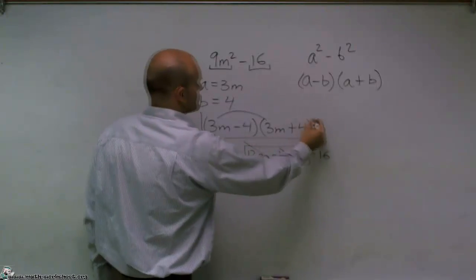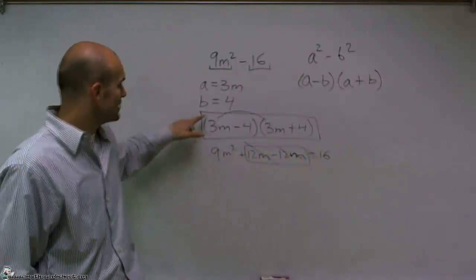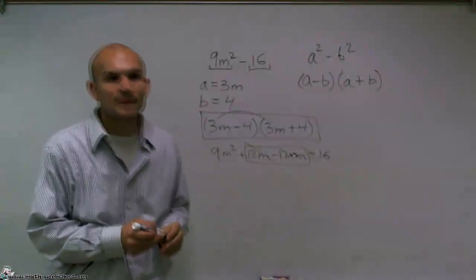So, just remember when you have two terms, look for the difference of two squares. And you can see it's 3m minus 4 times 3m plus 4. Thanks.